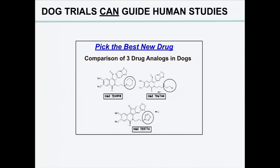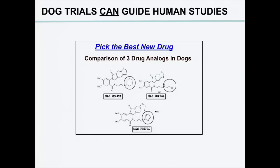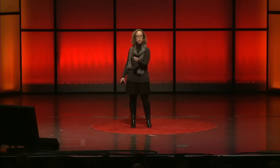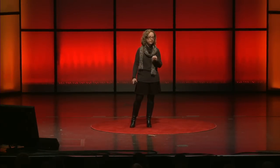Another conundrum often faced during drug development is that sometimes we come up with analogs of the same drug that all look pretty good, and we use mouse models to predict which one should move forward. What we found is that mouse models don't often predict which one should go. In one clinical trial, we had to pick between three drugs — we put them in dogs and were able to show that one was much more superior to the others, and that one went forward in human clinical trials. Interestingly, the mouse model had predicted the wrong drug.